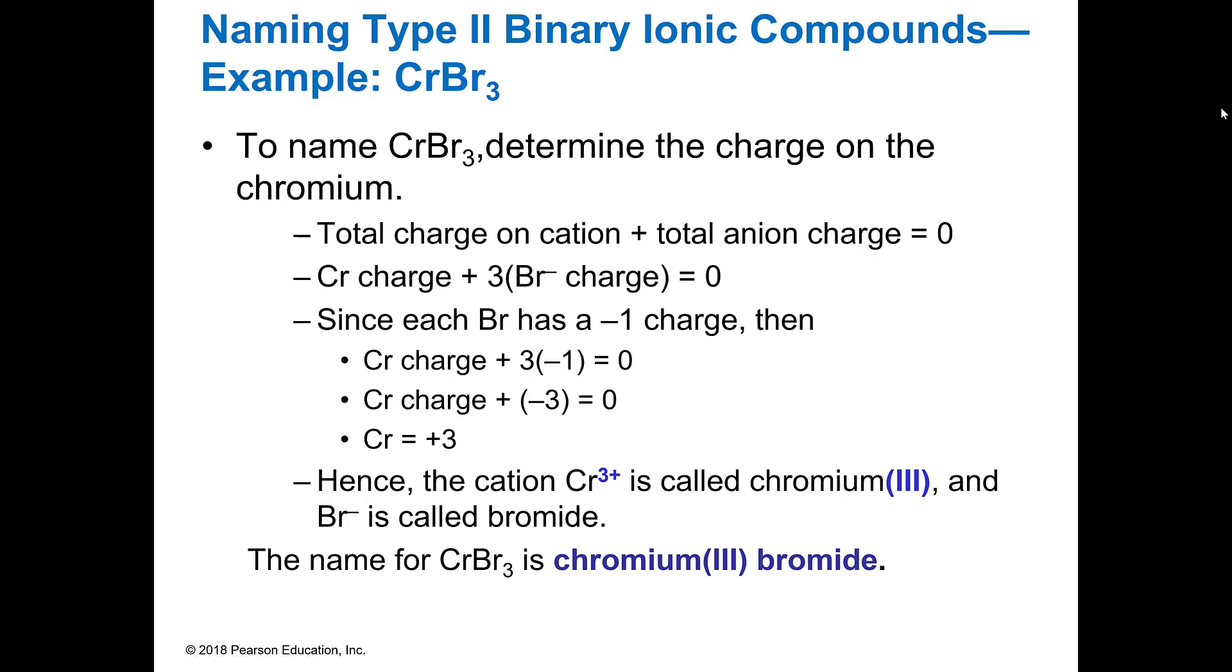So CrBr3, if we're going to name that, we're going to look at the total charge of the cation and the total charge of the anion and they must equal zero. So chromium, chromium can be multivalent because it's one of those transitions. But bromine is in 7A and bromine is a representative atom or element. So it's always going to be a minus one because it's in group 7A. So I have bromine, which is a minus one. And I have three of those. So that times three is a minus three, right? And then in the formula that it's showing me, I've got one chromium. So I have one chromium. So 1X equals three. So the charge on that must equal three.